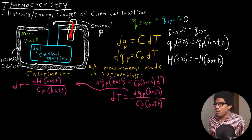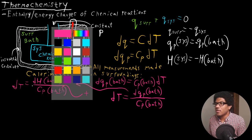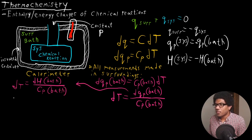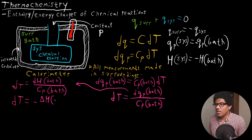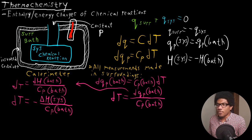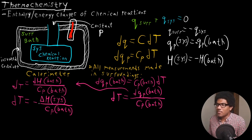All we have to do is change this equation. So we have DT equal to negative ΔH of the system over the heat capacity of the bath. We just plug in — if you solve for H_bath, that's just going to be negative H_system — and substitute in to get the temperature change.